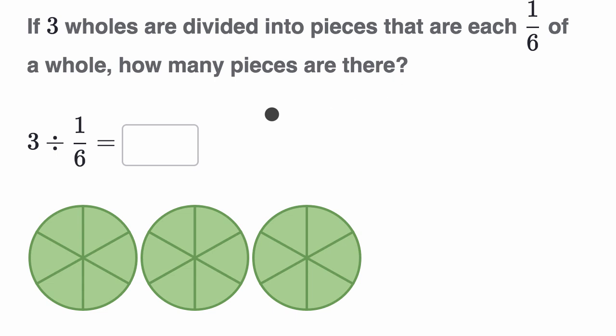Well, they really help us out with this visual, because we have three wholes. This is one whole, two whole, and then three wholes. And then we have divided them into pieces that are each one sixth of a whole. This is a sixth right over here. This is a sixth right over here. So each of these are sixths.